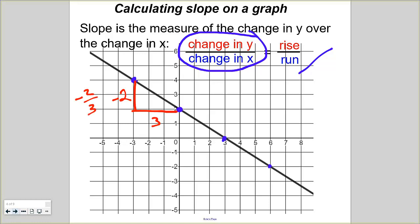And then if I go and calculate the slope again, down two to the right three, you'll see it's exactly negative two thirds. And it will be that all the way across the entire graph.